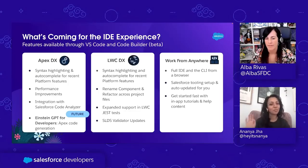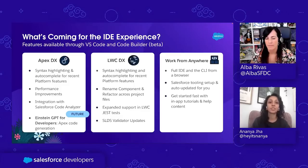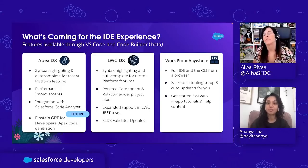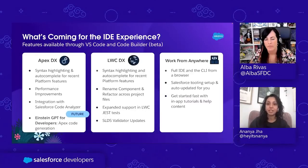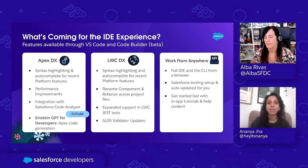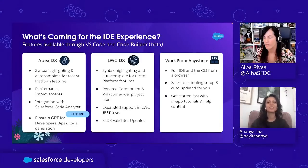Everything I talked about for Apex, we're focusing on the same things for LWC as well. For LWC, we want to make sure we're focusing on including syntax highlighting and autocomplete for all those recent platform features. We will also be expanding support across other typical language dev features — things like the ability to rename component refactor across your files and making sure that you're able to run tests accurately.